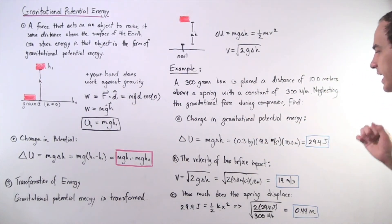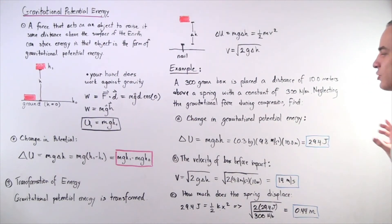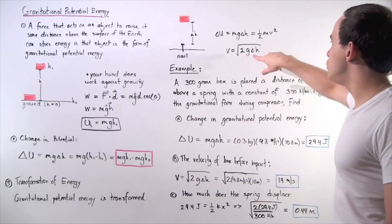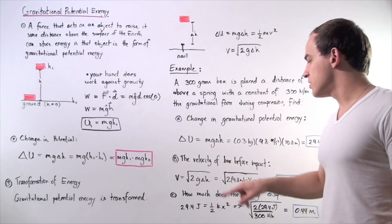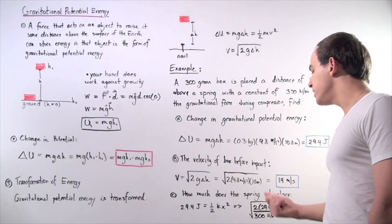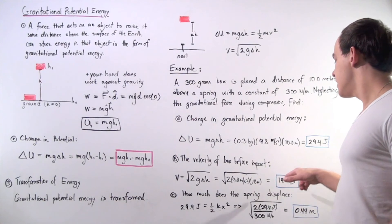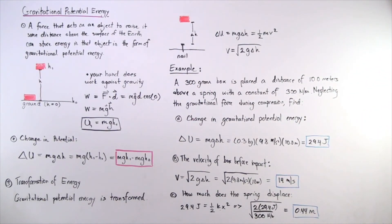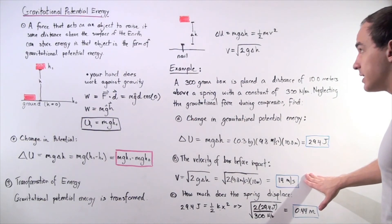Right before impact, all this energy goes into increasing the object's velocity. To find the velocity, we use the formula: velocity equals the square root of 2 times g — 9.8 meters per second squared — multiplied by the change in h, which is 10. This gives us 14 meters per second. So right before impact, the velocity of the object is 14 meters per second.